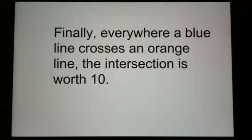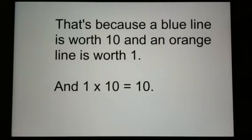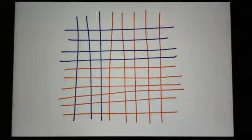Finally, everywhere a blue line crosses an orange line, the intersection is worth 10. That's because a blue line is worth 10 and an orange line is worth 1, and 1 times 10 equals 10. So let me mark those off.